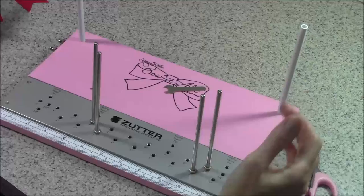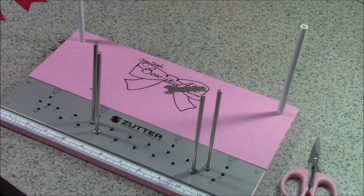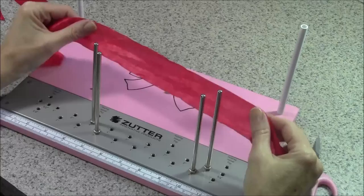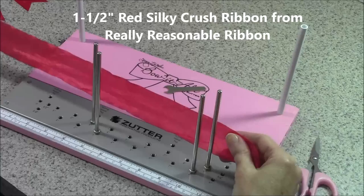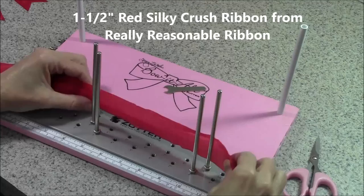I have my back pegs set at three and nine inches and my front are set at three and eight inches. I have approximately five yards of my inch and a half wide silky crush ribbon. On the left, I'm going to leave a decent amount for the tail.